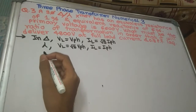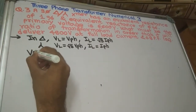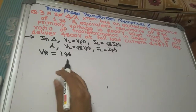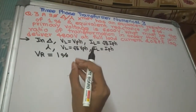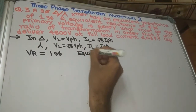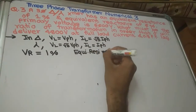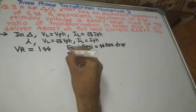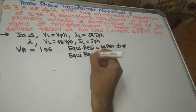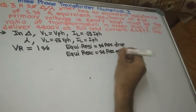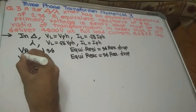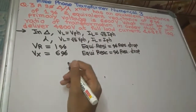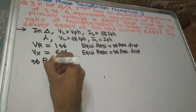They have given us equivalent resistance and equivalent reactance. One thing to always remember: if equivalent resistance is given in percent, then that itself is our percentage resistive drop (VR = 1%). Similarly, the equivalent reactance given is our percentage reactance drop (VX = 6%). From this we can calculate the percentage regulation.